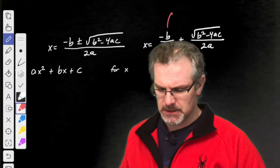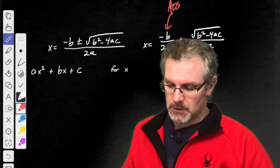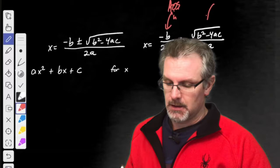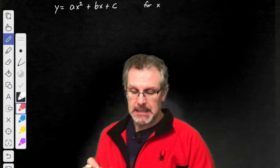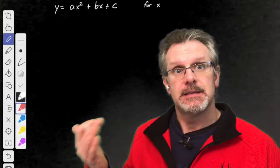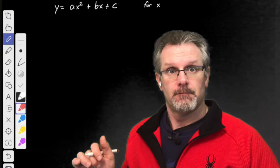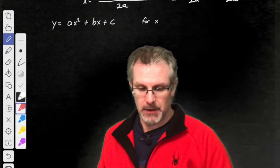Based on our example in the last class, we were looking at this being our axis of symmetry, or our h term, and the square root of b squared minus 4ac over 2a — that's going to be r, our distance from the axis of symmetry. So we're going to do completing the square on standard form to solve for x.